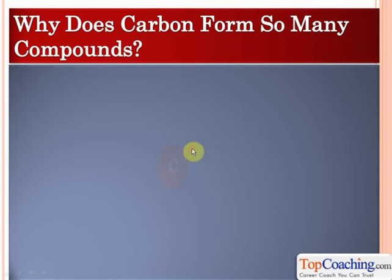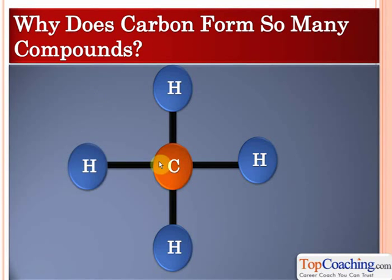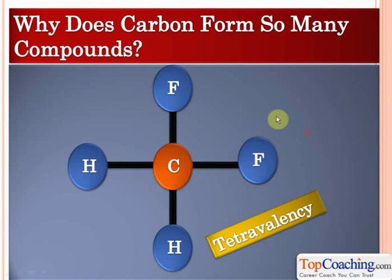The second reason why carbon forms so many compounds is its tetravalency. As we already know, the valency of carbon is four, so it can be attached to four atoms at once. If four hydrogen atoms are attached to carbon, and we replace one hydrogen with fluorine, we get another compound. Replacing another hydrogen with fluorine gives a completely different compound. Replacing three hydrogens with fluorine gives yet another compound. Since carbon can form bonds with four different atoms, a huge variety of carbon compounds can be formed by a very small number of other atoms.